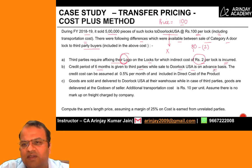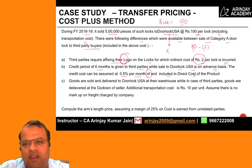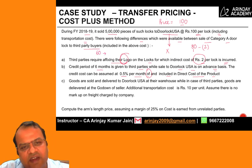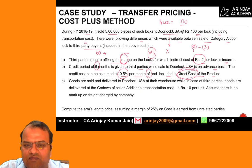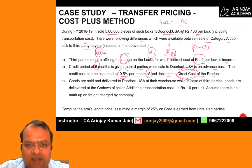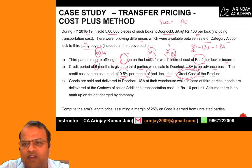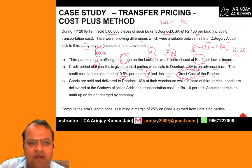A credit period of six months is given to third parties, while the sale to Door Lock USA is on an advance basis. The credit cost is assumed at 0.5% per month of the direct cost. For six months at 0.5%, that is 3% of the direct cost of 60, which comes to 1.80 rupees. Since this is included in the direct cost, I will reduce 1.80 from here, leaving me with 76.20.